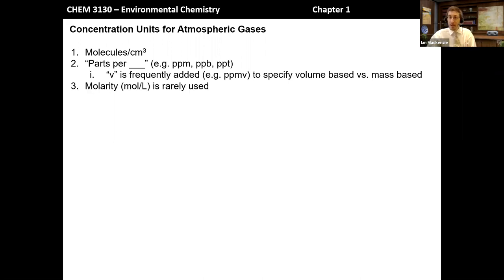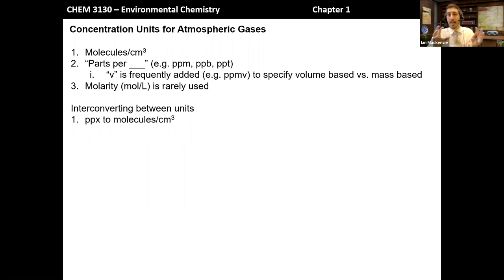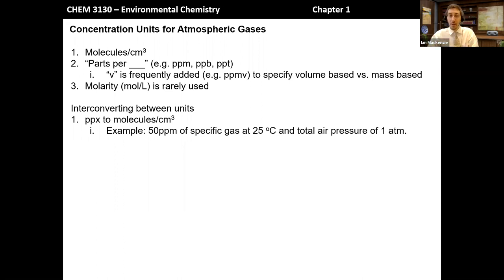In general chemistry, whenever we dealt with parts per million or parts per billion, it was generally a mass scale, whereas in the atmosphere this is a volume scale. Molarity is occasionally used, but only very rarely — it's really not a very useful concentration unit. So let's look at how we interconvert between some of these units. As an example, let's take 50 ppm of a specific gas at 25 degrees Celsius and a total pressure of one atmosphere — maybe at sea level.